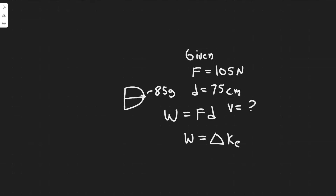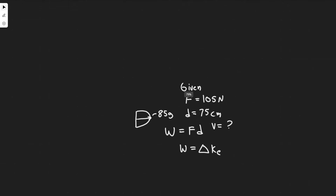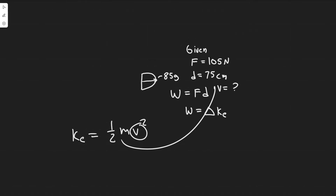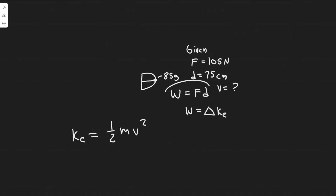What is kinetic energy? The formula for kinetic energy is one half mv squared, so KE equals one half mv squared. Now I've related velocity to force and distance. Since work equals force times distance and it equals the change in kinetic energy, all we have to do is solve for v.